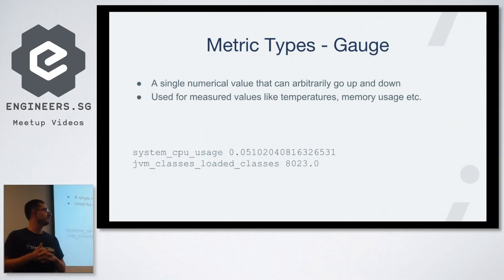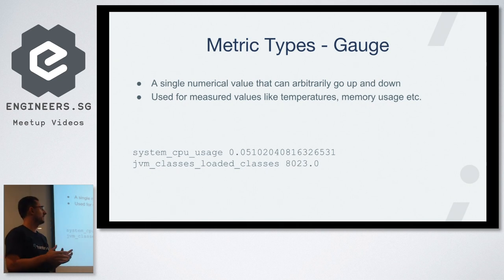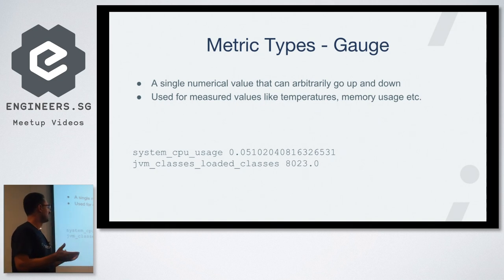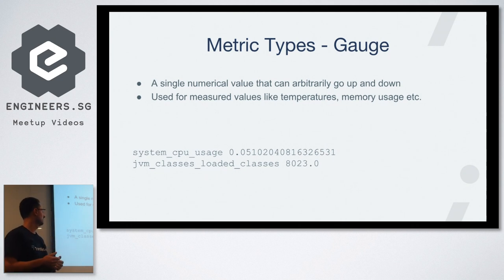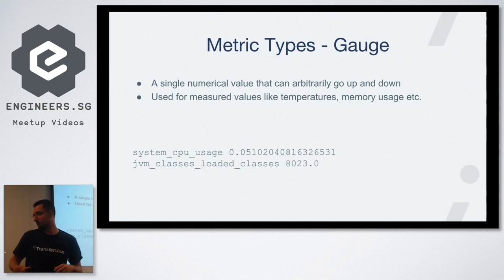The second metric type is gauges. They are also a single value, but unlike counters they can go up and down. People normally use them to track CPU usage, memory usage, and JVM classes loaded in memory. Normally these don't go down, but it depends on the JVM implementation — you can unload classes if you want to.